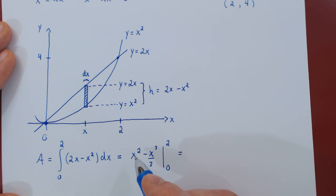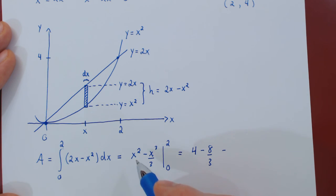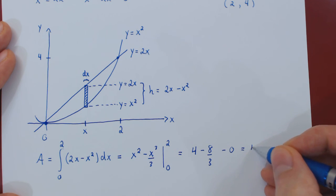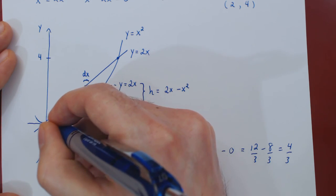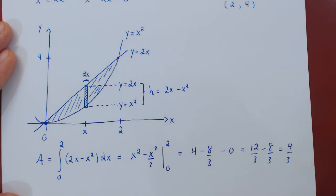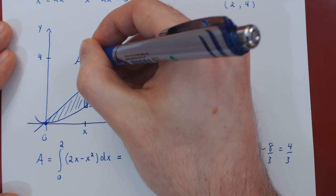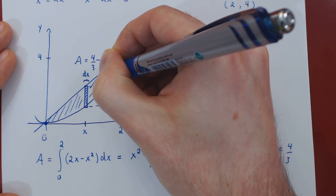So first, plug in 2 for x, so you'll get 2 squared is 4, minus 2 cubed is 8, so 8 thirds, minus the antiderivative when x is 0. But if you replace x by 0, the result is simply 0. So we're left with 4 minus 8 thirds. If we put everything over 3, this is 12 over 3 minus 8 over 3, which, of course, is simply 4 thirds. So the exact area of the region in the xy plane bounded by y equals x squared and y equals 2x is 4 over 3. And that's it.